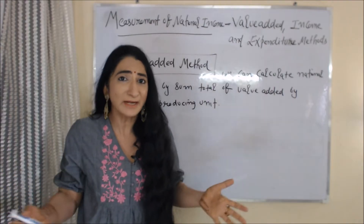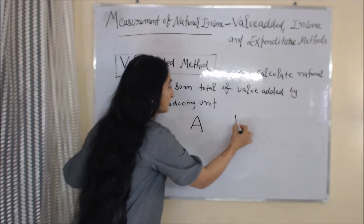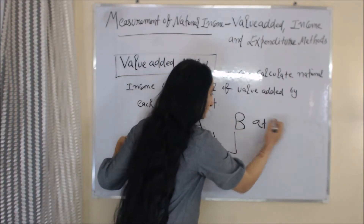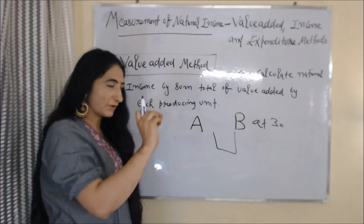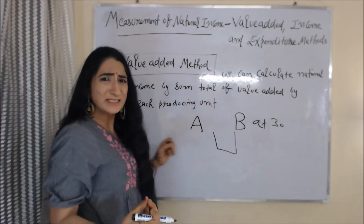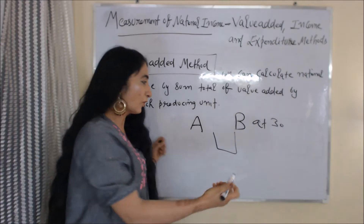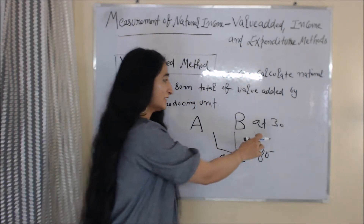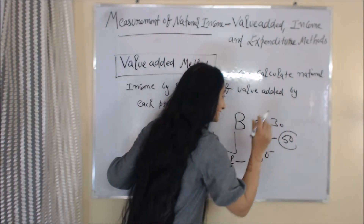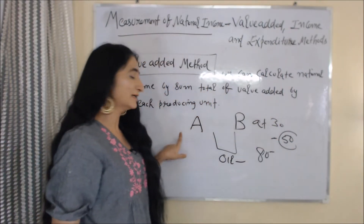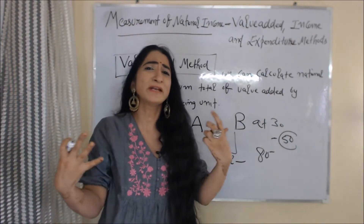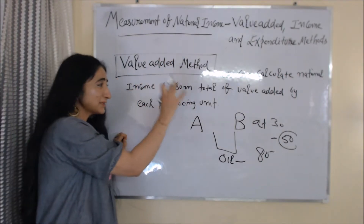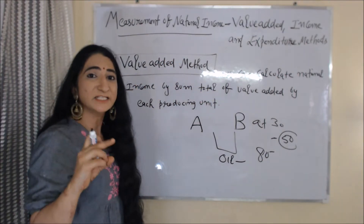So what is value added? For example, firm A buys groundnut from firm B at rupees 30. Using this groundnut, firm A prepares oil and sells this oil in the market at rupees 80. The difference between 80 and 30 is equal to 50. We can say that 50 is value added by firm A. Similarly, there are so many producing units. According to this method, we calculate national income by the sum total of value added by each producing unit.